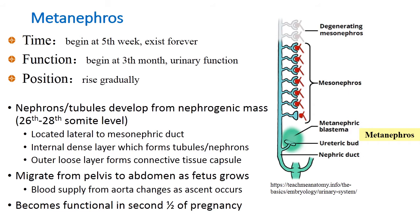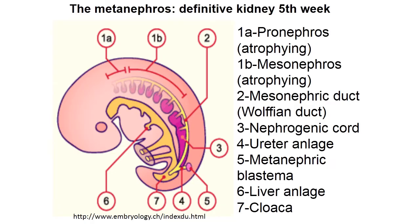Metanephros becomes functional in the second half of pregnancy. On this picture you can distinguish the nephrogenic cord and the left mesonephrogenic duct. Pay attention to the mesonephric blastema and the atrophying pronephros and mesonephros.